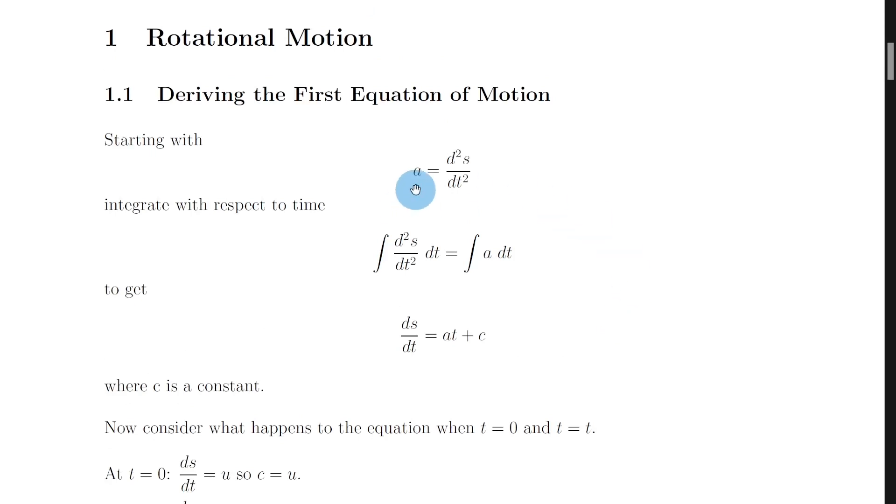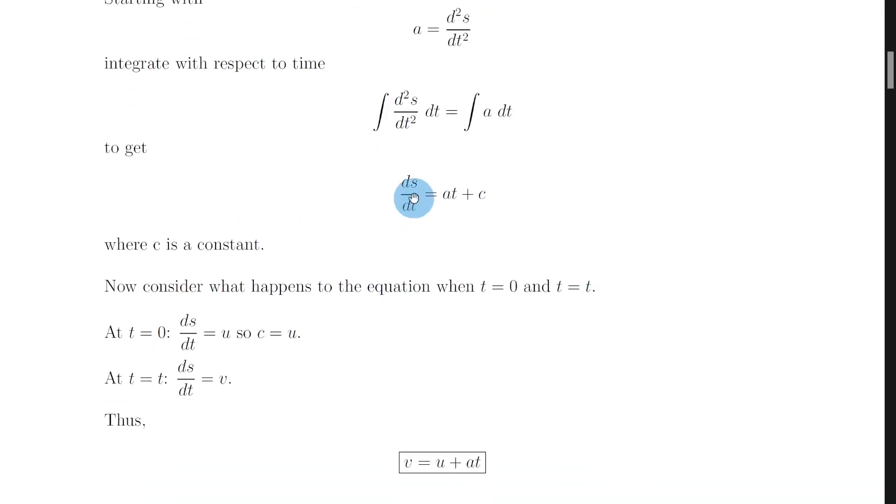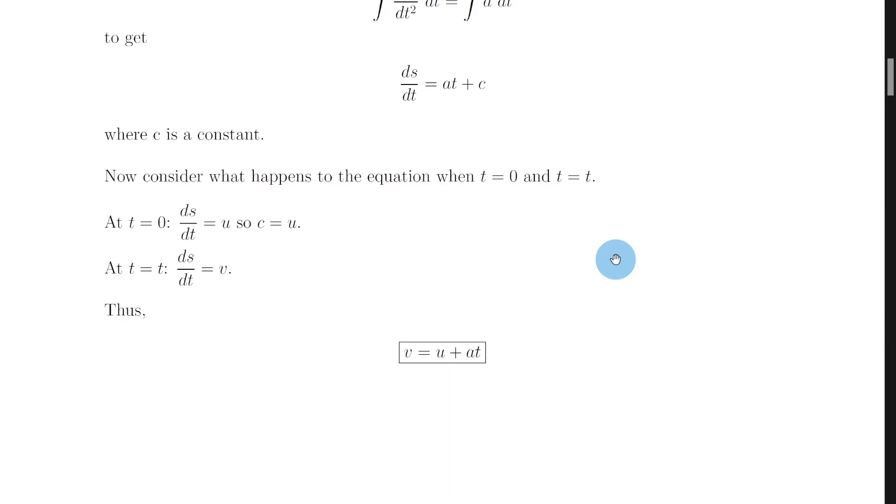So just to recap, the starting point is a equals d squared s by dt squared. You then want to integrate both sides with respect to time t. And then you end up with ds by dt equals at plus c, where c is a constant. You then want to see what happens to this expression when t equals zero and when t equals t. And that will give you the u term and the v term to form the first equation of motion, v equals u plus at.